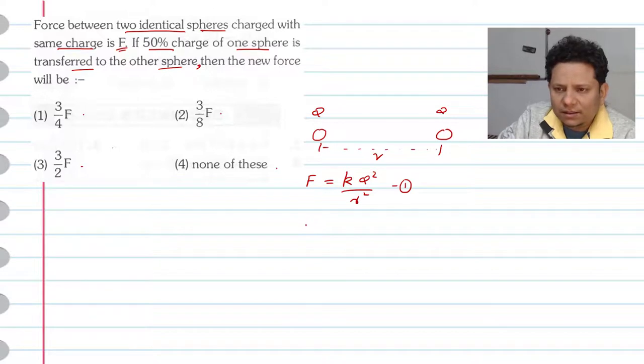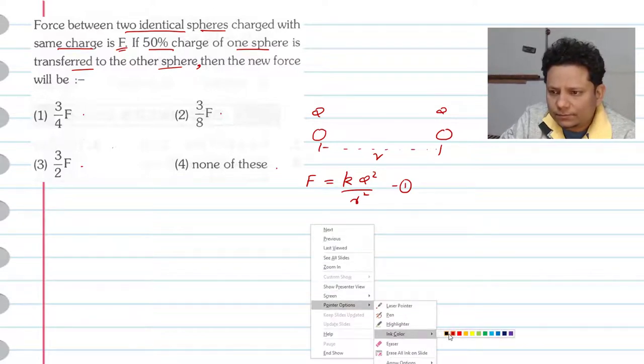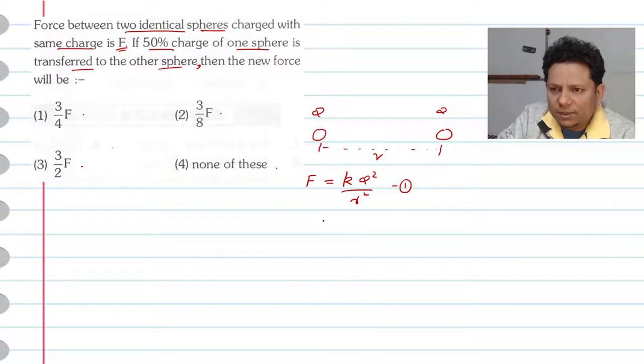In the second case, we take 50% of this charge - that means on this sphere the remaining charge will be Q/2 - and we transfer it to this sphere. So this sphere's charge becomes Q plus Q/2, which equals 3Q/2.